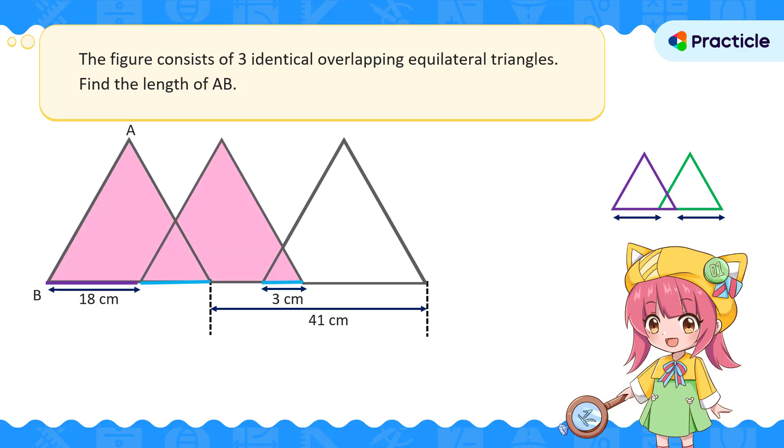We're given that this length that doesn't overlap on the left triangle is 18 cm. What do you think the length that doesn't overlap on the right is? If you said 18 cm, you're right! Good job for thinking of that. This gives us a big clue.